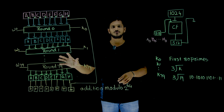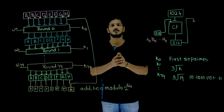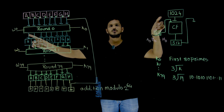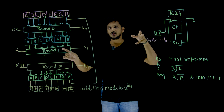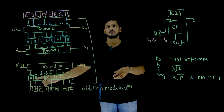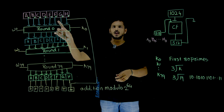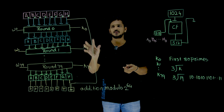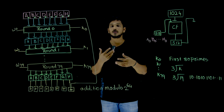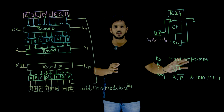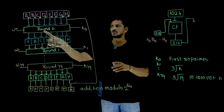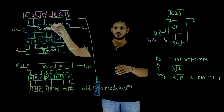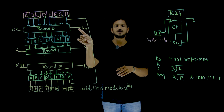In our compression function, we have a total of 80 rounds. Each round is going to take one word generated from the 1024-bit message — each round will take one word as input. Along with this, each round is given another 64 bits, which we call K0, K1, so on up to K79. These are constants. How we are going to generate these constants, we will discuss at the end of the class. Each round takes A0, B0, C0, E0, F0, G0, and H0 as input to round 0, and W0 and K0 are also taken as input.